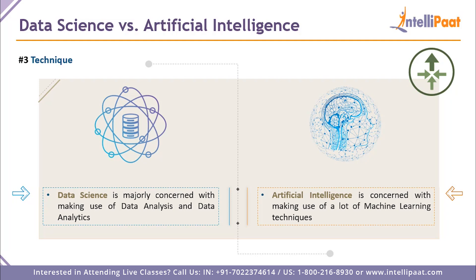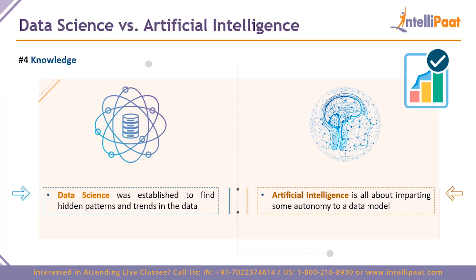Point three is technique, where there is a lot of difference between the two. In data science we are majorly concerned with data analysis and data analytics — data analysis uses past data to analyze the present, while data analytics uses past and present data to predict future trends. In artificial intelligence, we deal with machine learning concepts such as deep learning, neural networks, and much more to process all of the data.